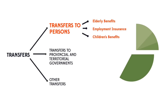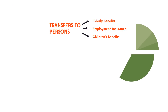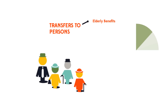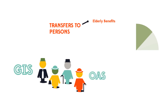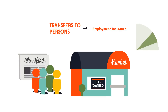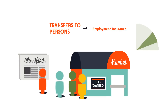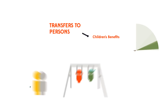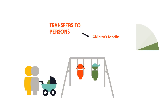Transfers to persons make up 25% of the budget and is the largest category. It includes elderly benefits like the guaranteed income supplement, which helps seniors living on lower incomes; employment insurance benefits, which help Canadians who are looking for work; and children's benefits, which help families with young children.